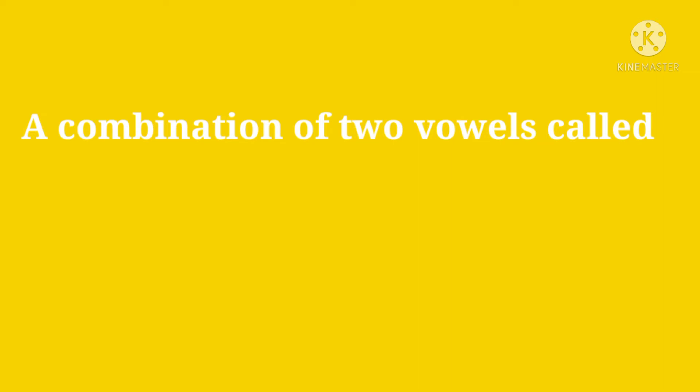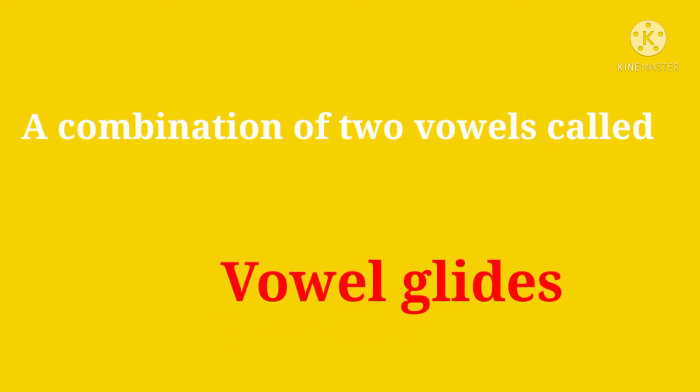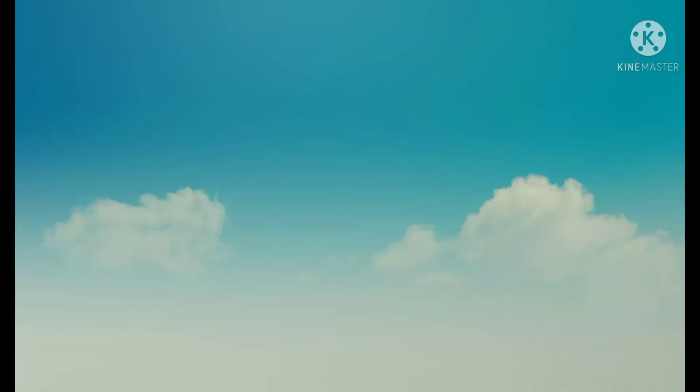Next: a combination of two vowels is called — the answer is vowel glides. A combination of two vowels is called vowel glides.